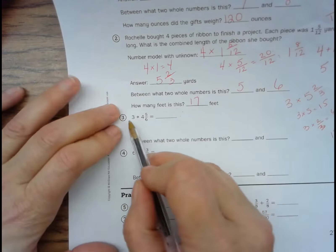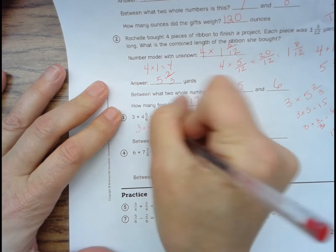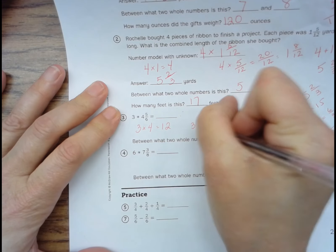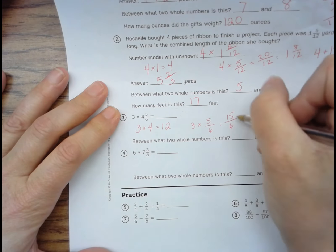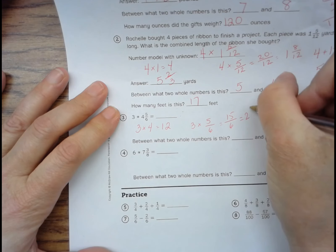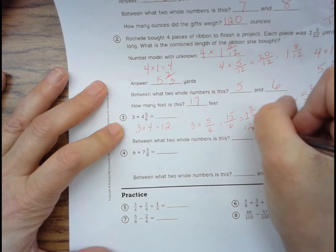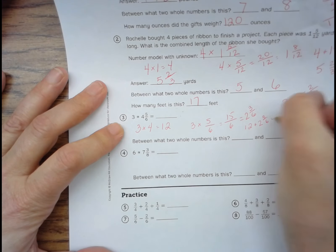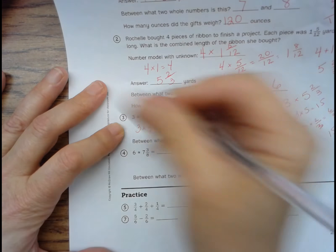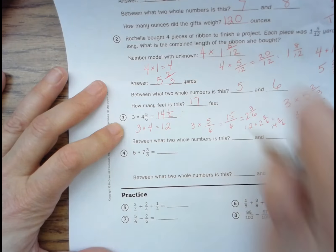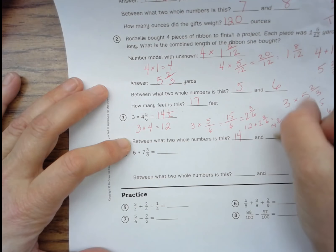So three times four and five-sixths. Three times four is twelve. Three times five-sixths equals fifteen-sixths, which equals six goes into fifteen two times with a remainder of three. And twelve plus two and three-sixths equals fourteen and three-sixths. And we can simplify that to fourteen and one-half. Between what two whole numbers is this? Fourteen and fifteen.